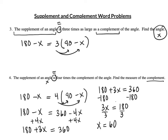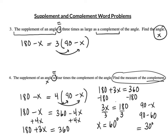The angle is 60 degrees, but that is not the answer, because I need to find the measure of the complement. The complement is 90 minus x, so in this case it's 90 minus 60. The answer to this question is actually 30 degrees.